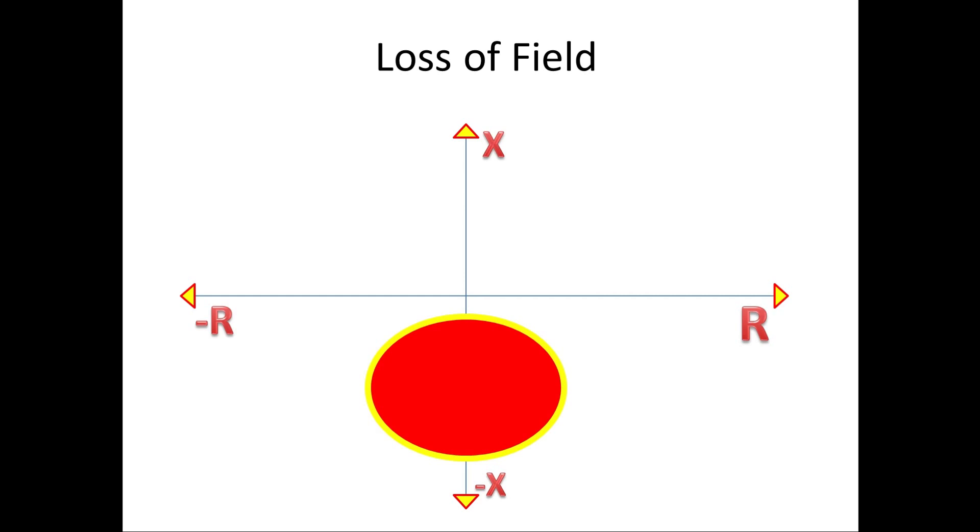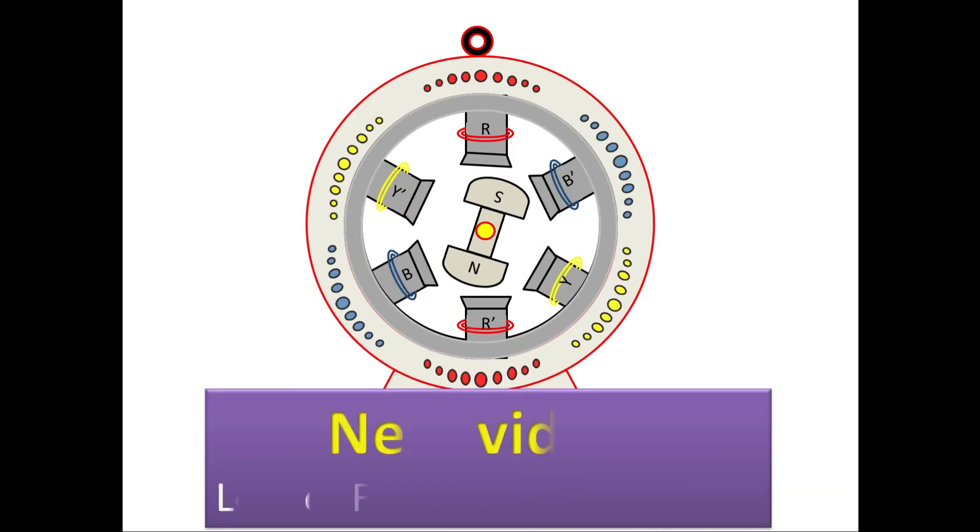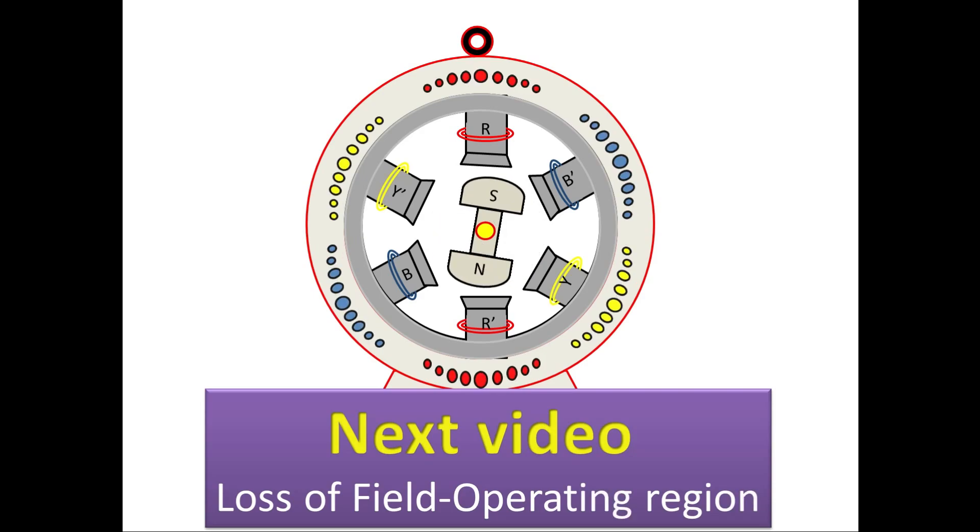This protection is based on impedance. So we consider R and X. I believe that you all may get a basic idea about this loss of field protection. In the next section, I will show the reason and its operating region for loss of field.